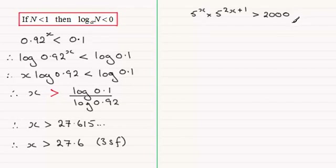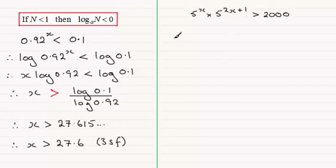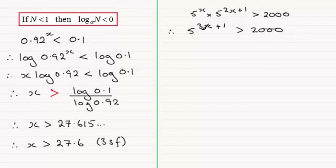OK, this brings us on to the next example. In this next one, you can see it's slightly different, whereas we've got 5 to the power x multiplied by 5 to the power 2x plus 1 is greater than 2000. Well, they're to the same base — base 5 — so I can add the powers. This is the same as 5 to the power x plus 2x, which is 3x, and then plus 1, and that's going to be greater than 2000. From here on, it's much the same as what we did before, only just got to take a bit of care over certain steps.